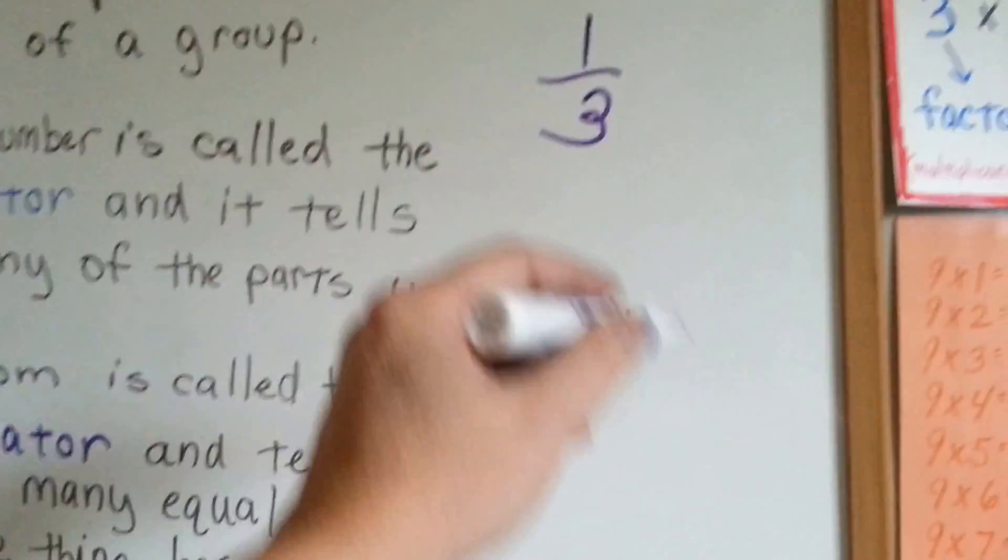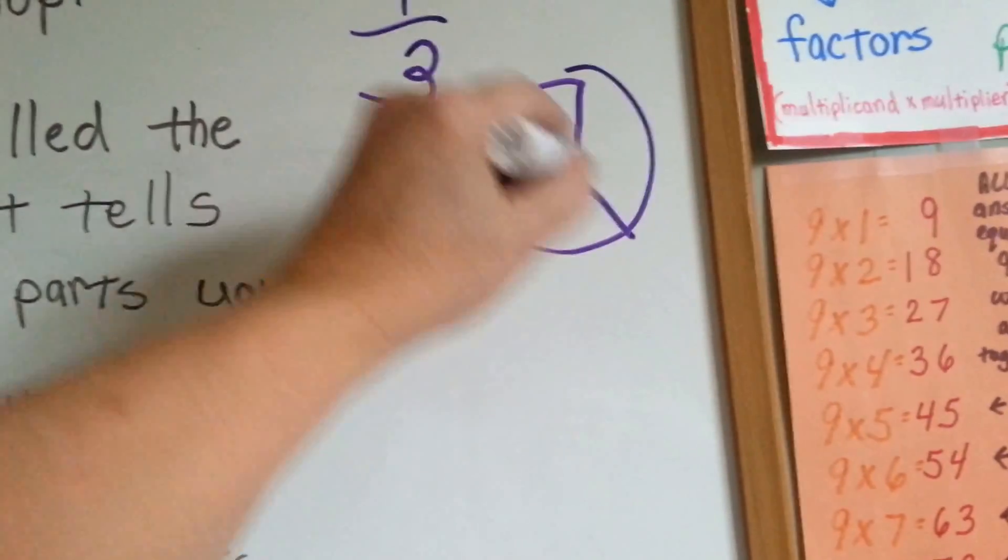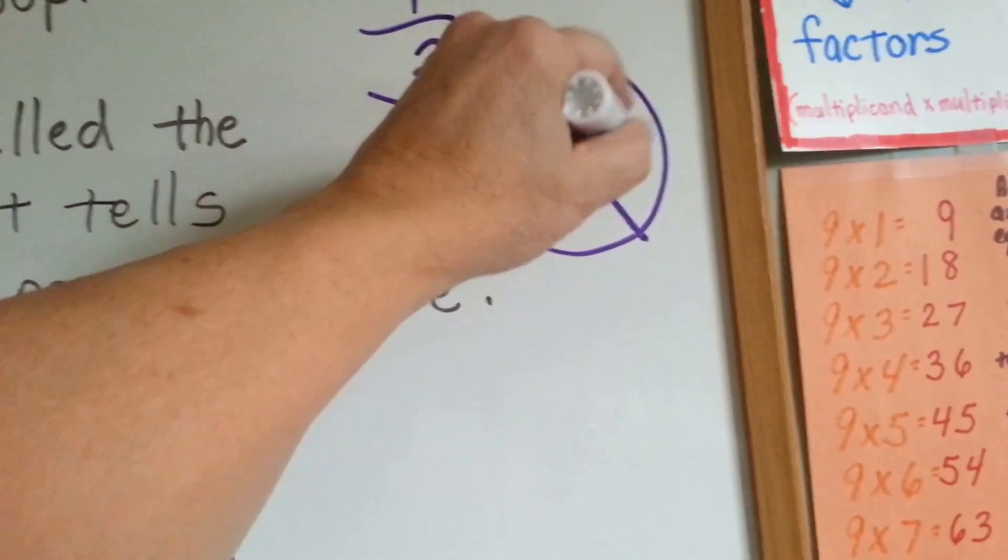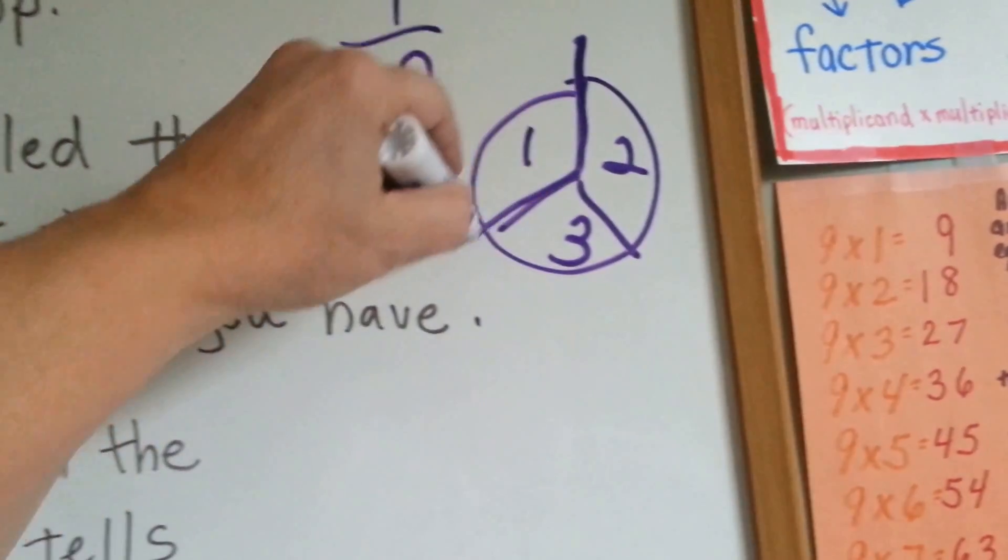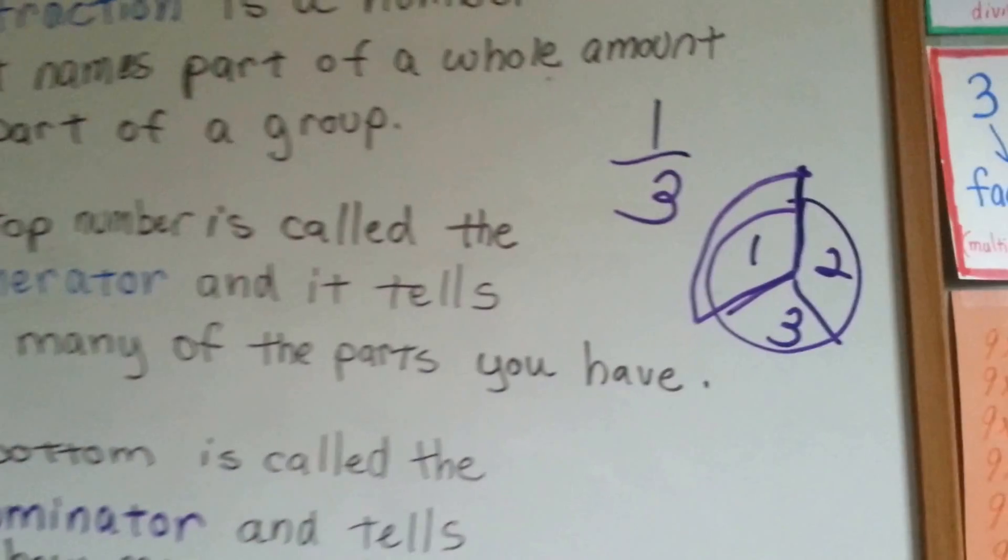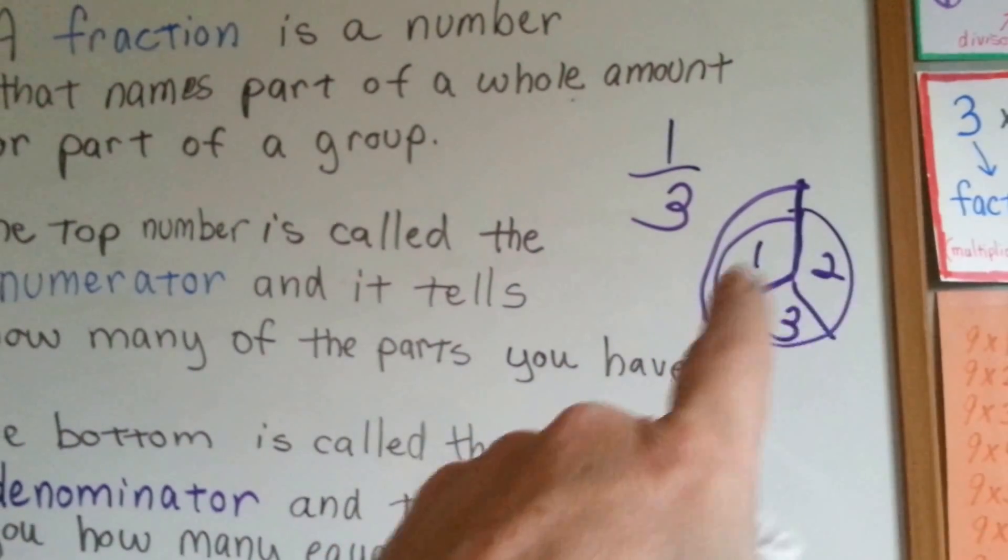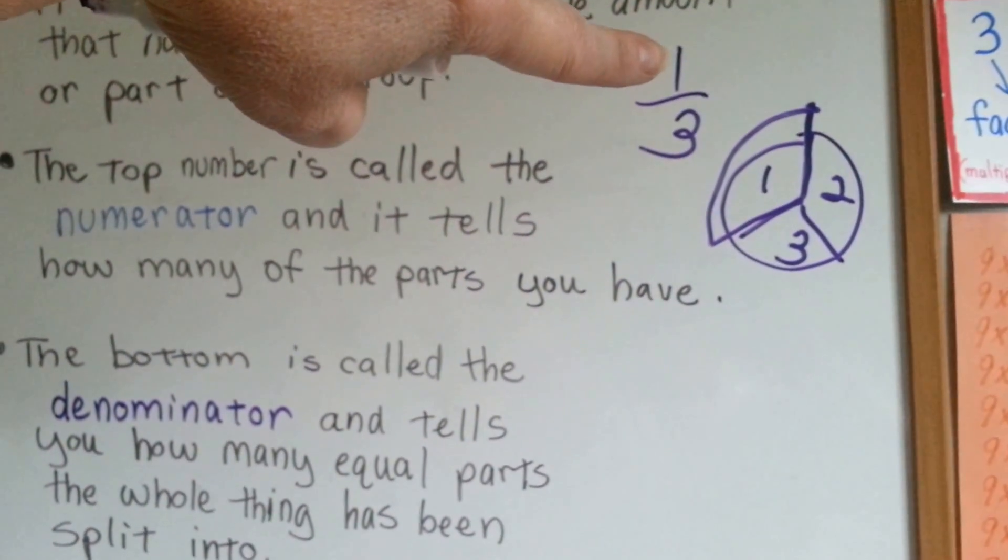So if I have one-third, if there's a pizza and it's split into three parts, and I have this one for me, then I have one-third of the pizza. I have one of the three parts. So the numerator tells you how many parts you have.